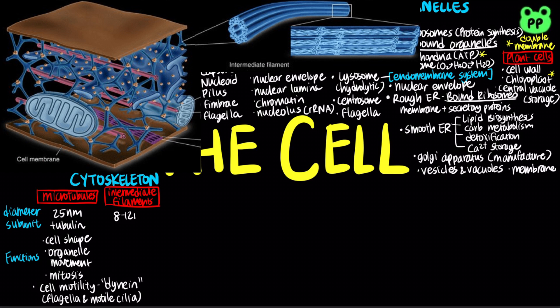Intermediate filaments range in diameter from 8 to 12 nm. They are composed of fibrous proteins such as keratins, and they function in maintaining cell shape, fixing organelles in place, and forming the nuclear lamina.